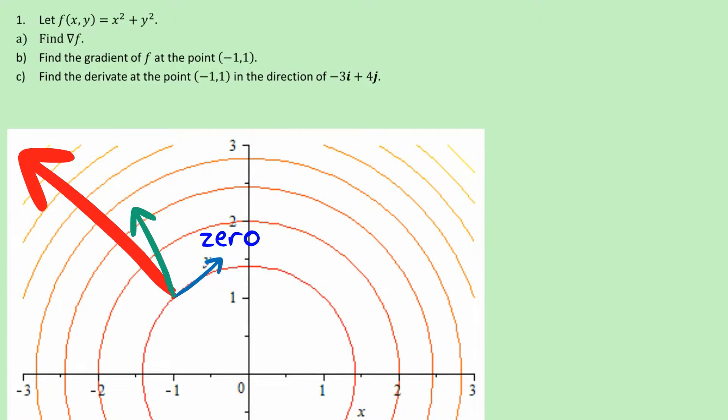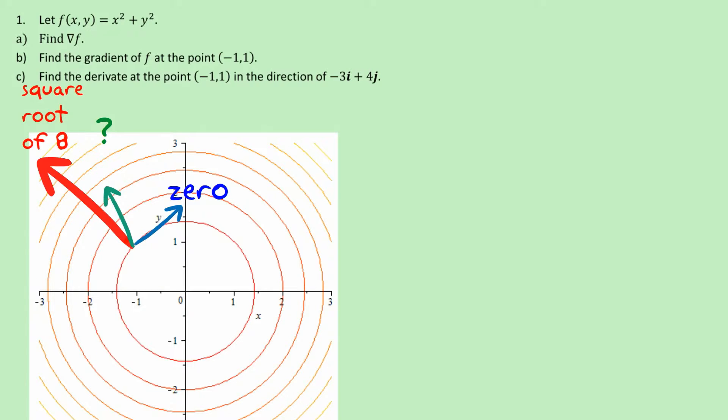And obviously this derivative in this direction doesn't depend on the length of this vector (-3,4), and so we're going to use the unit vector to work this out. And this is very well suited to the dot product to work out what this should be. In fact, that is the way you work out the directional derivative.